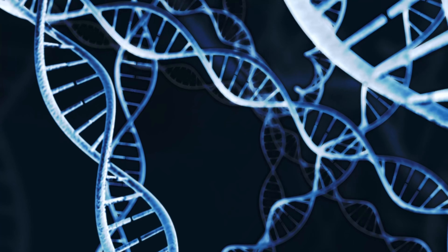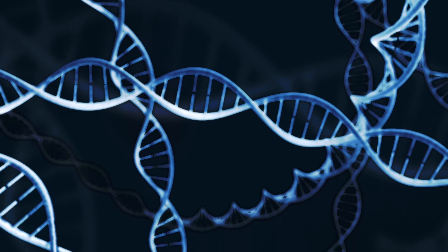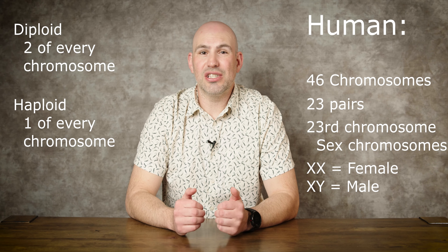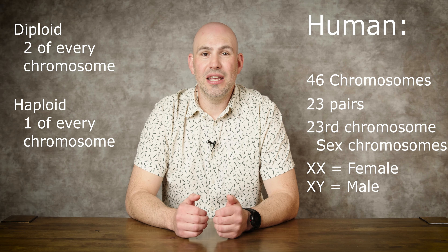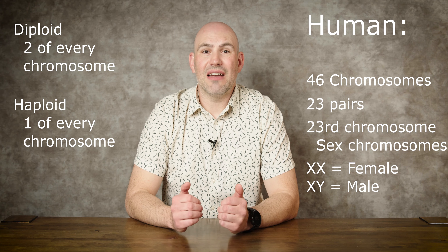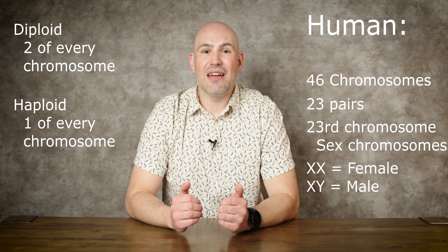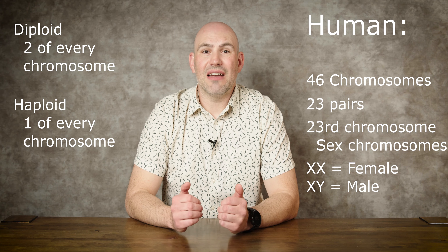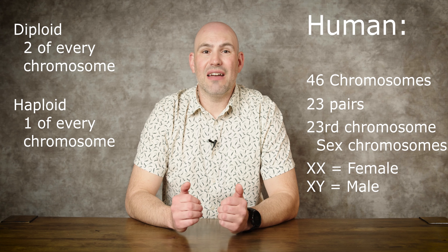I want to take a moment to talk about the advantages of being a diploid organism. Being diploid means that I have two of every chromosome, so I have backup copies. If there's a gene that is damaged on one of my chromosomes, I had two copies of that gene, so usually I have a backup that can help me if I have DNA damage. This is also going to play a big role in genetics. When we start talking about genetics, we'll talk about different traits that are recessive or dominant, and that is possible because you have two of every chromosome.